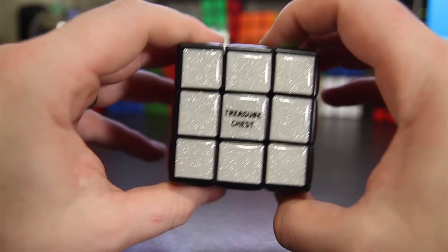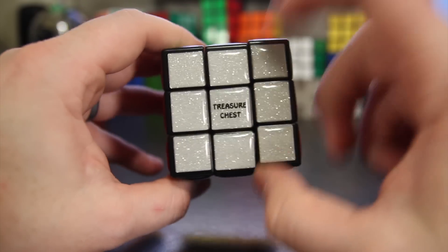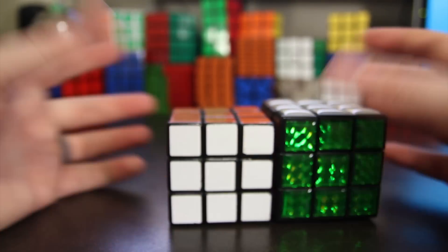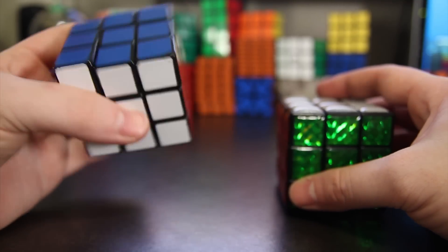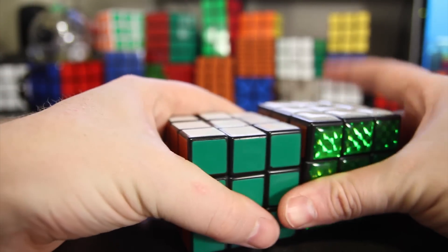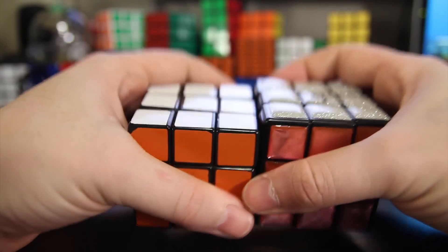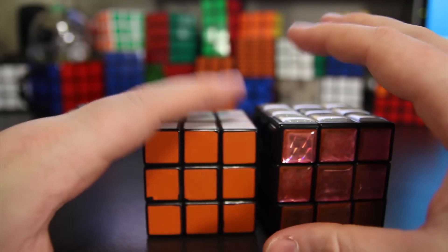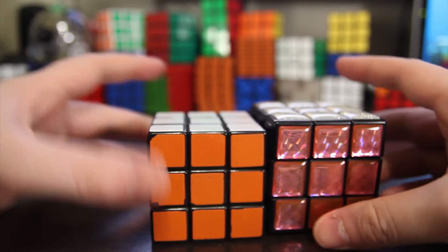So let's do a quick size comparison. Here is Oscar's treasure chest and next to it we have a standard Rubik's Cube, this is a Rubik's brand Rubik's Cube. And yeah, so you can see they are pretty close, pretty similar to the same size, but the treasure chest is a little larger than the Rubik's Cube.